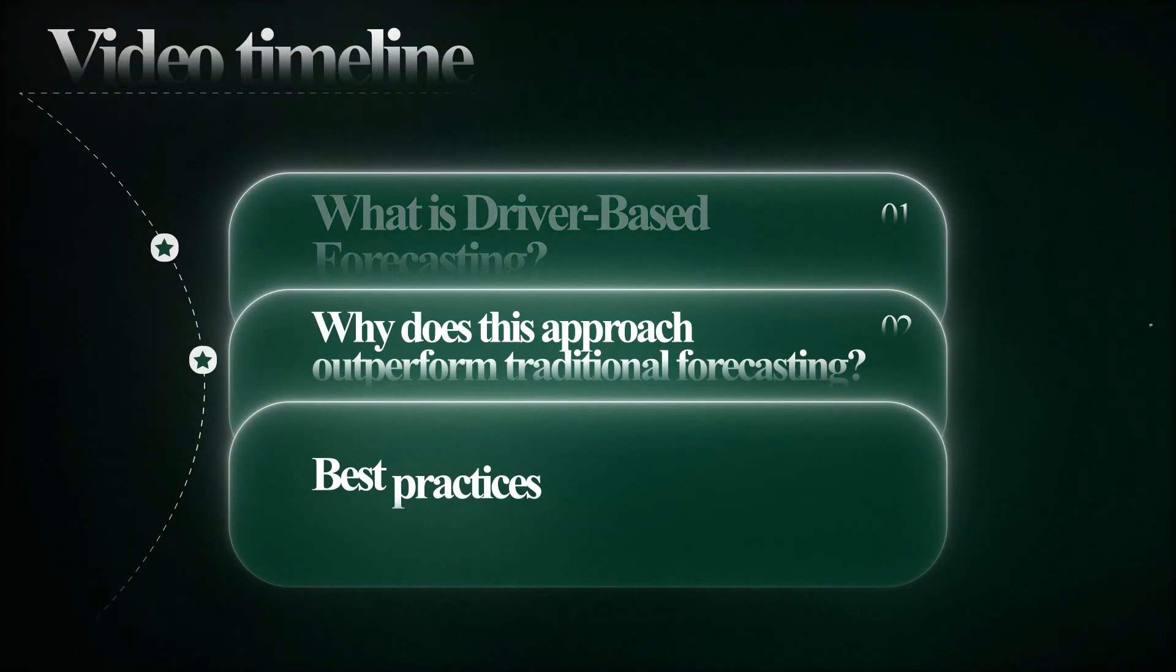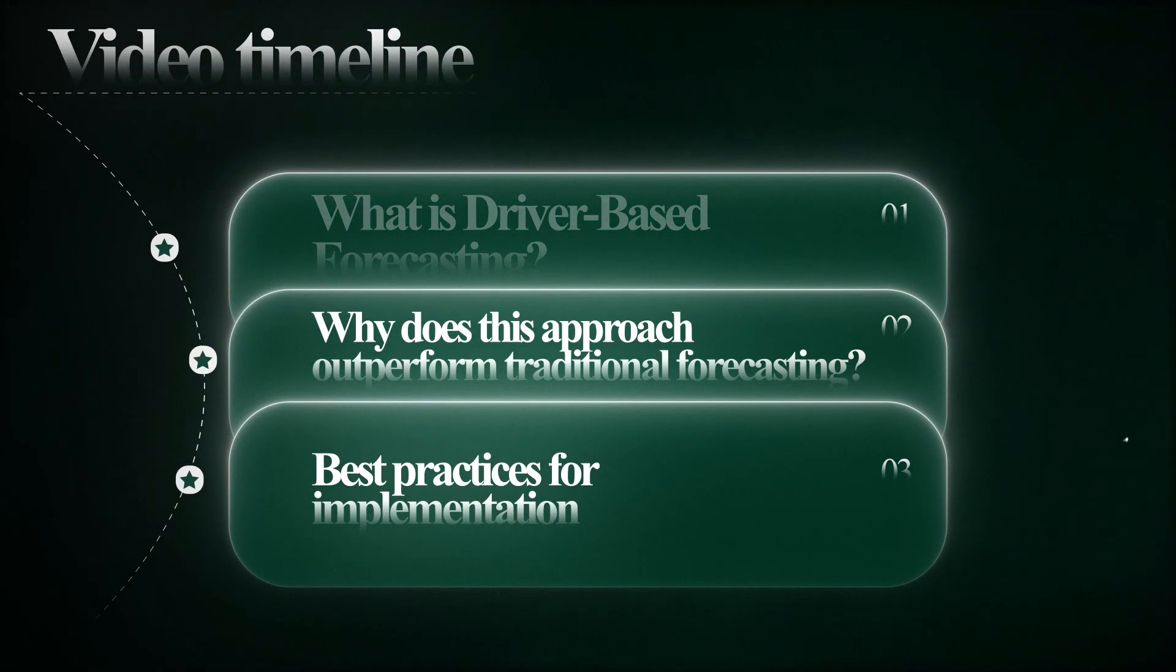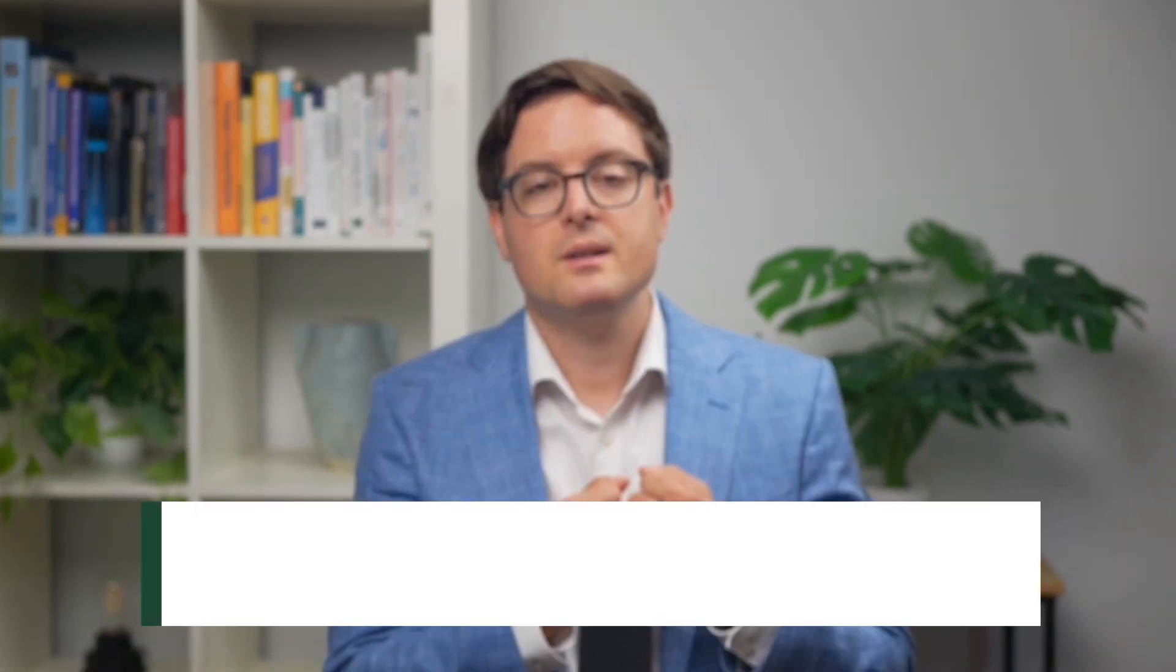Now let's take a look at best practices for implementation. If you want to implement this in your own organization, here are the key things to consider. Focus on the 80-20 rule. Start with the 20% of drivers that have the largest impact. If you try to include every possible business driver, your model becomes too complex to actually influence decision-making.